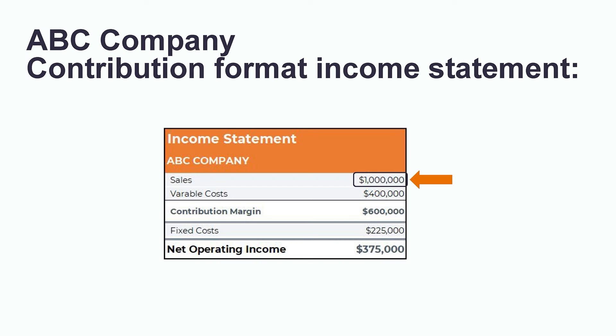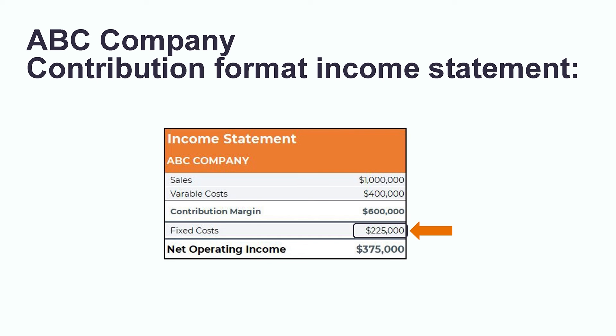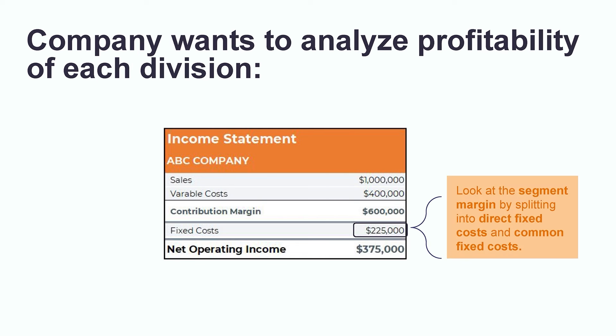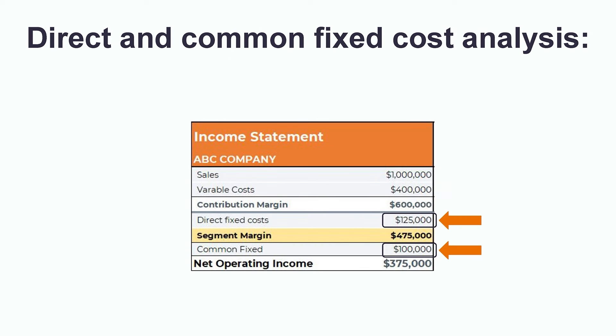Now let's look at an example of a segmented income statement. Here we have ABC Company's contribution format income statement for their full company. The company had total sales of $1,000,000, less variable costs of $400,000, bringing them to a contribution margin of $600,000, which is what they have available to cover their fixed costs. The total fixed costs for the organization were $225,000, giving a total net operating income of $375,000. The first step is to split the $225,000 total fixed costs into $125,000 of direct fixed costs and $100,000 of common fixed costs.